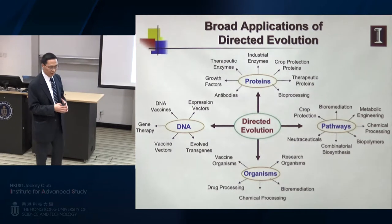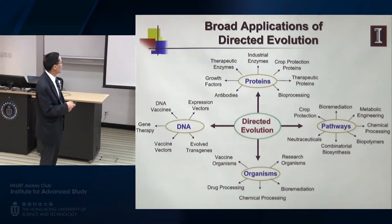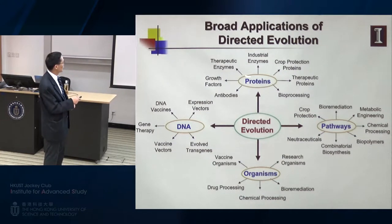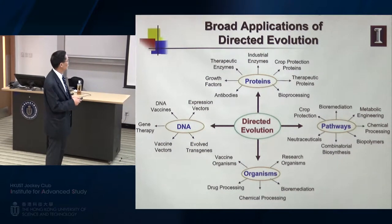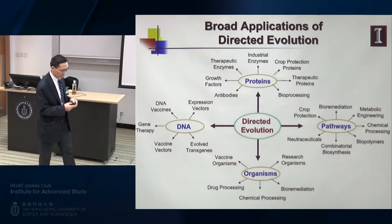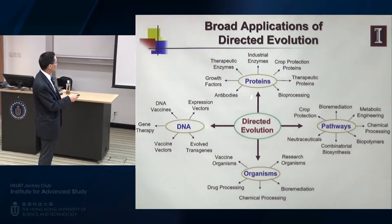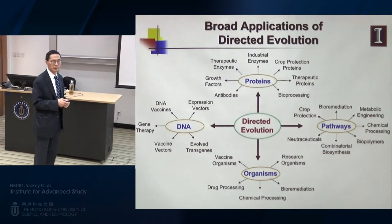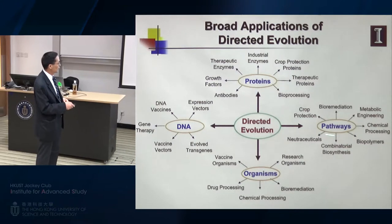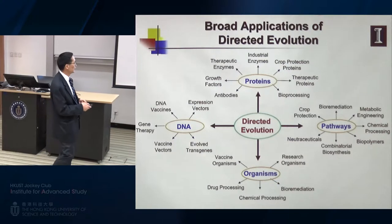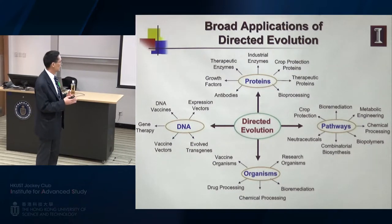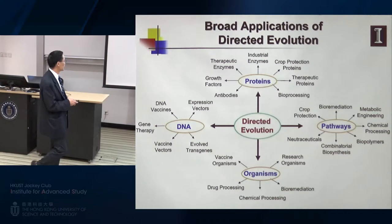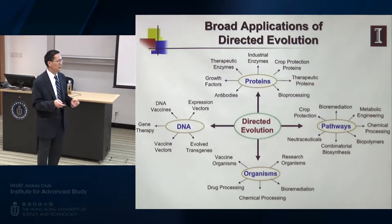Directed evolution is a broadly applicable approach. You can engineer proteins for various applications: enzyme catalysts, core protection proteins, antibody engineering. One Nobel Prize winner this year was recognized for antibody engineering work. Directed evolution can also be used for pathway engineering to produce chemicals, polymers, natural products, or nutraceuticals, and to engineer microorganisms for various applications. It has a very broad range of applications.